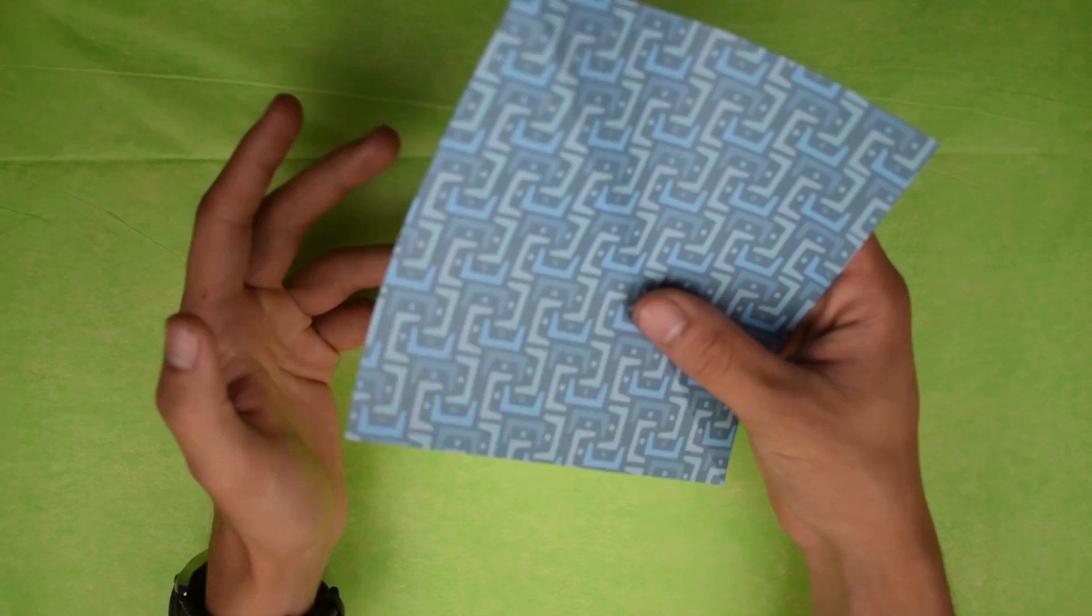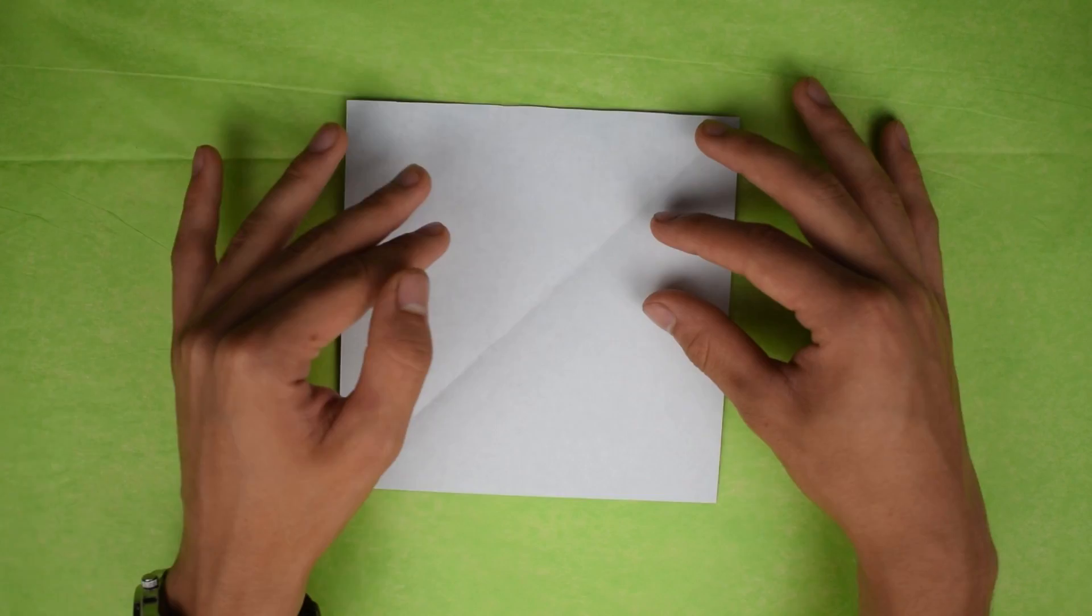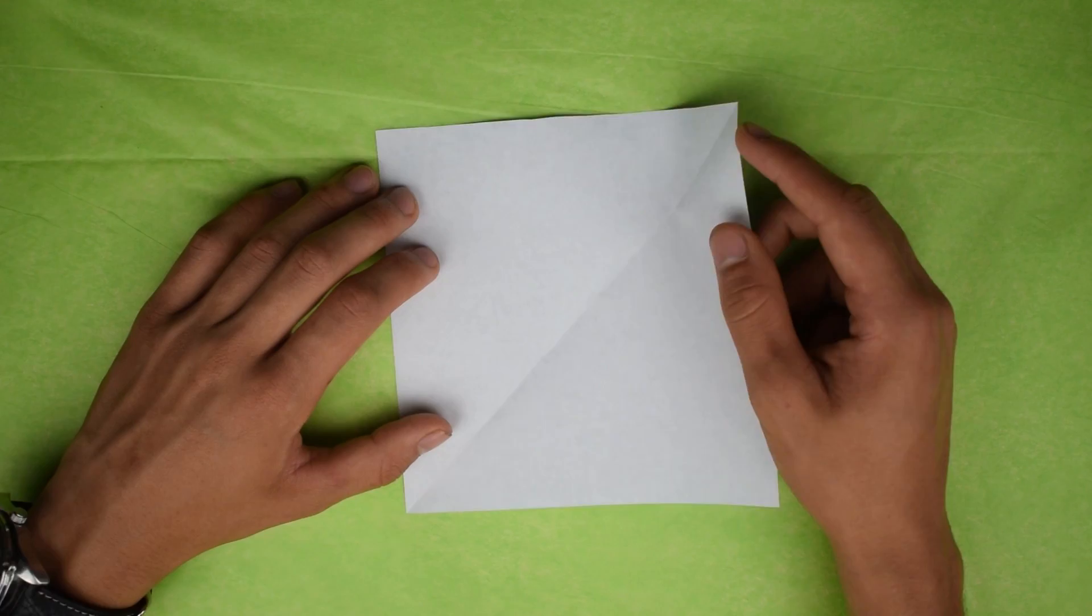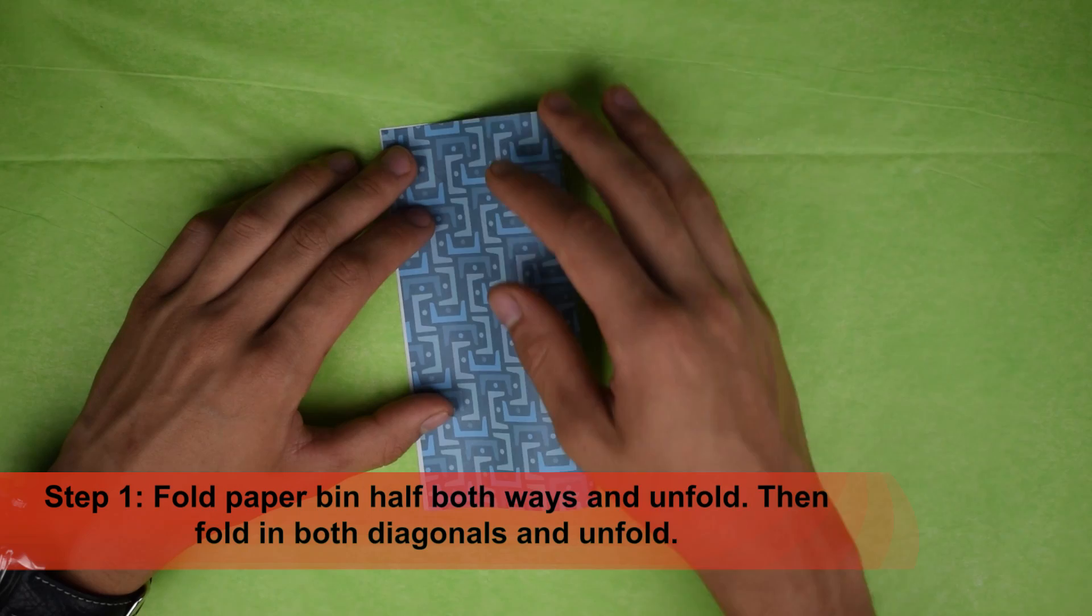So I'm going to be folding my fortune teller so that the exterior will be white. Alright, so let's go ahead and get started. What we're going to do is we're going to fold it in half both ways to start. So just go ahead and do that.